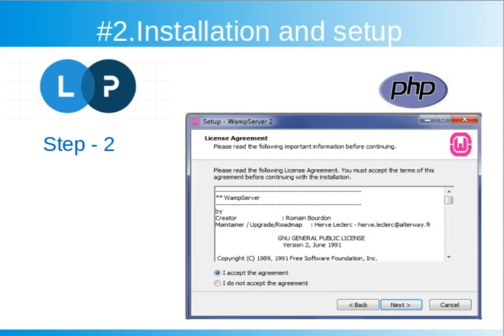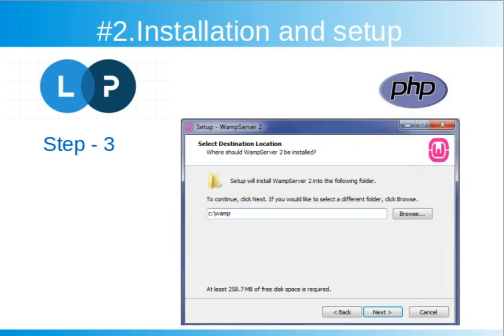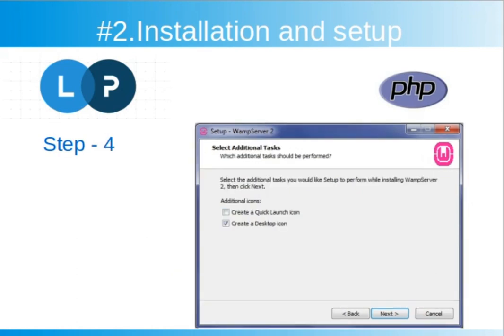This window shows the WAMP server terms and conditions and license agreement. You need to check 'I accept the agreement' and then click next. The next screen will ask for the destination of installation. By default it will select your operating system drive, which is the C drive. You can also change it — if you want to change the location, click on the browse button, choose your destination folder, and then click next.